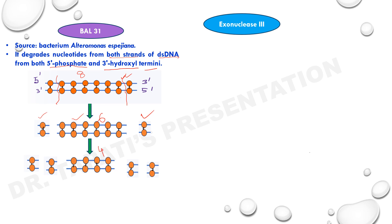This enzyme also possesses single-stranded DNA and RNA endonuclease activity and is capable of cleaving at DNA or RNA nicks and gaps. Overall, BAL31 has both exonuclease and endonuclease activity and acts on double-stranded DNA as well as single-stranded DNA or RNA.